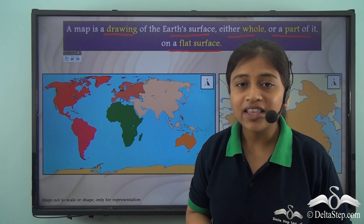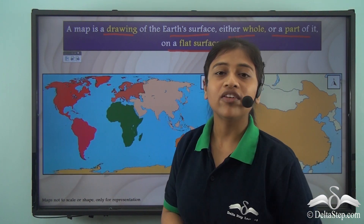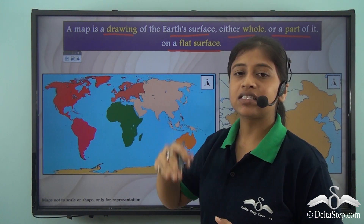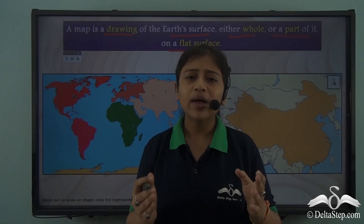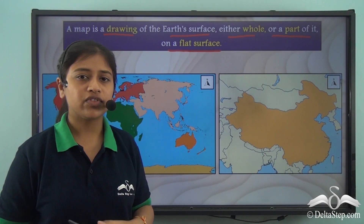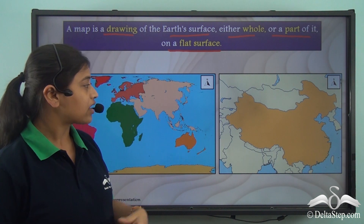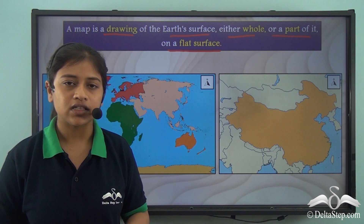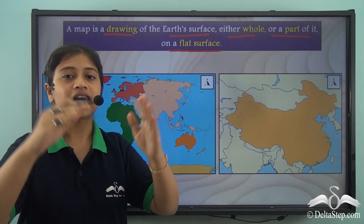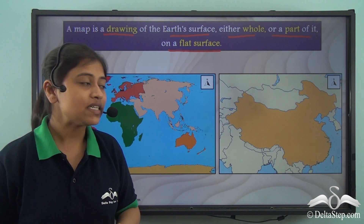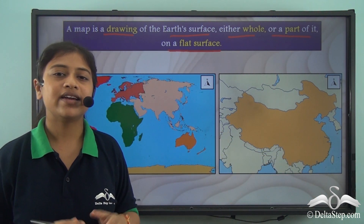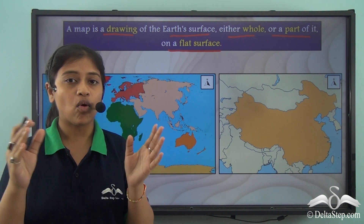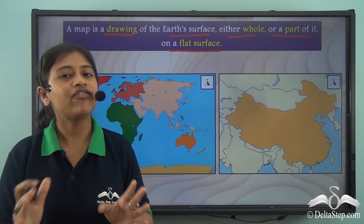Either we can have the entire Earth's view on a flat surface — the drawing of the entire Earth on a flat surface — and that serves the purpose of a map. However, if we only wish to study a particular part of the Earth, for example, the country of China which is part of Asia, then we do not need to take the entire world map but will only take the map of China and do our necessary study. So maps are a representation of the Earth's surface, either whole or a part of it, on a flat surface.